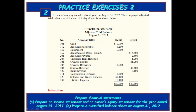Hercules Company ended its fiscal year on August 31, 2017. The company's adjusted trial balance as of the end of its fiscal year is as shown below — Hercules Company adjusted trial balance, August 31, 2017.